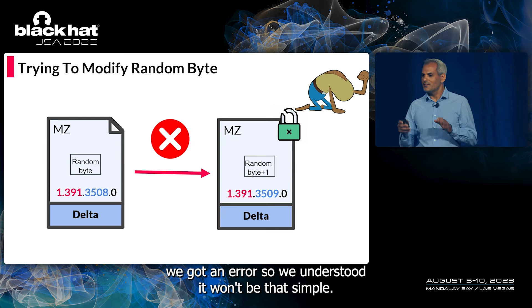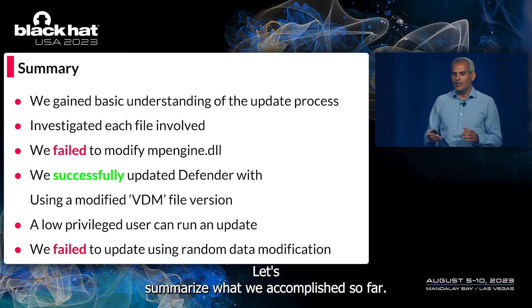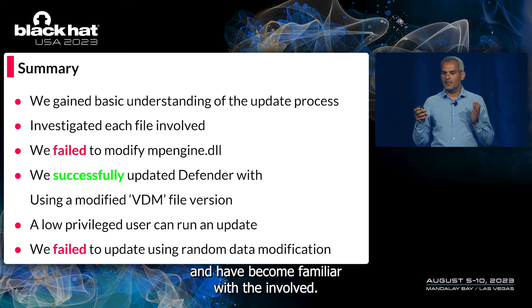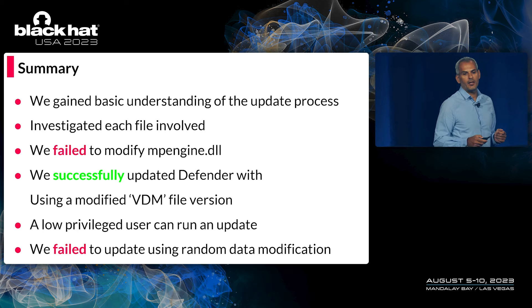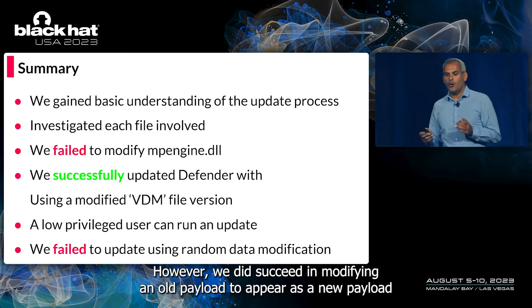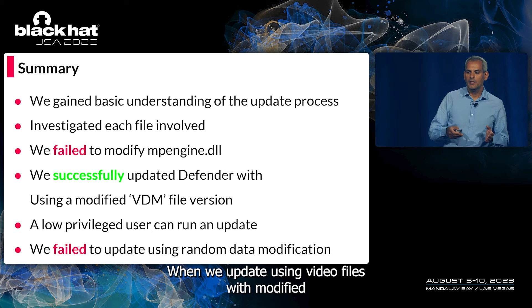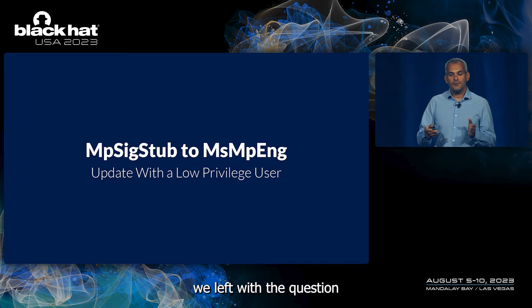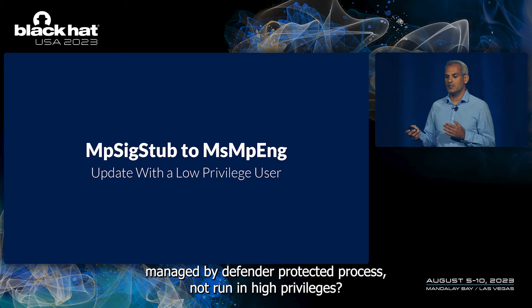We understood it wouldn't be that simple and we had to learn more about the update process. To summarize: we understood the high-level Windows Defender update process and became familiar with the involved files. We attempted to modify MP Engine with a fake DLL but were unsuccessful. We succeeded in modifying an old payload to appear as a new one by modifying VDM files, but got an error when we updated using VDM files with modified random data. The question remaining was: how can a low-privileged user replace files managed by Defender's protected process running with high privileges?